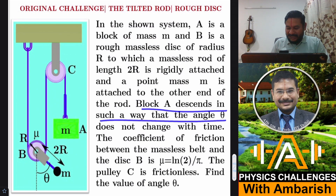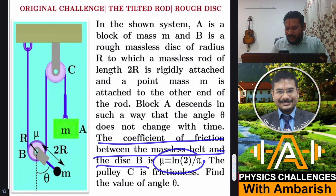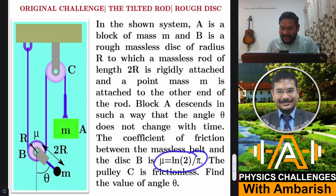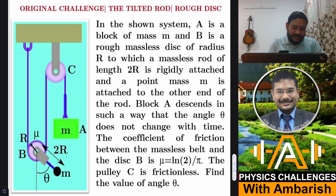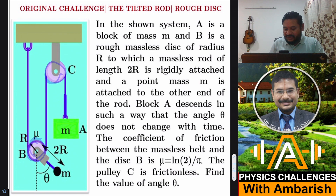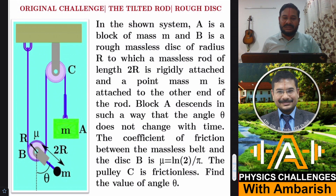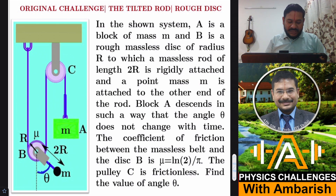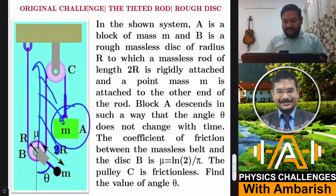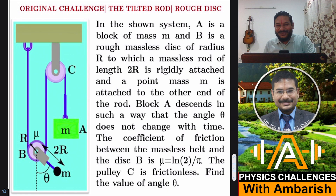Block A descends in such a way that angle theta does not change with time. The coefficient of friction between the massless belt and the disk is mu = log 2 / pi. So log 2 upon pi is the coefficient of friction between the belt and the rough disk. Pulley C is frictionless — the only friction is at the disk. We are given that theta does not change as the disk goes up, and we have to find the value of theta. You can give it a try; I will get into the analysis right away.